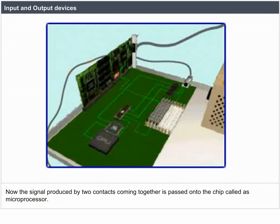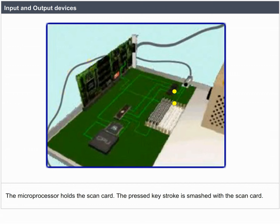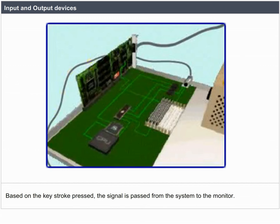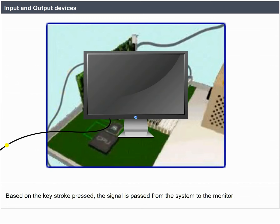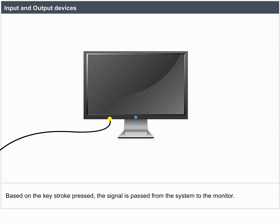The signal produced by the two contacts coming together is passed to a chip called the microprocessor. The microprocessor holds the scan code. The pressed keystroke is matched with the scan code. The microprocessor passes this information to RAM, and based on the keystroke, the signal is passed from the system to the monitor. Finally, the result is a character displayed on the screen.